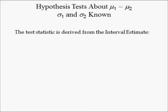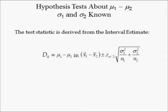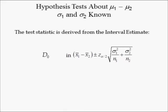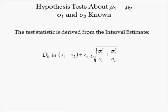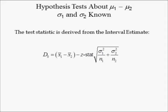The test statistic is derived from the interval estimate. By definition, d0 is the difference between population means. Since the difference in the population means is in the interval estimate most of the time, d0 is in the interval estimate most of the time. Intuitively, if we replace plus or minus z subscript alpha divided by 2 with minus z-stat, we could say that d0 equals the difference in sample means minus the product of z-stat and the standard error of the difference in means. Solving this for z-stat yields the test statistic.